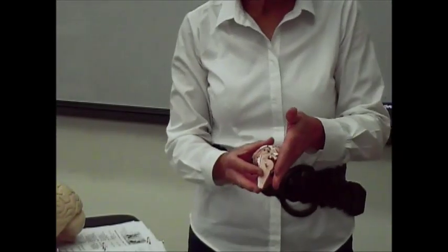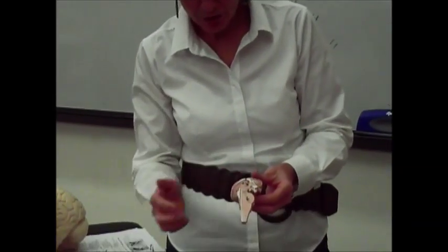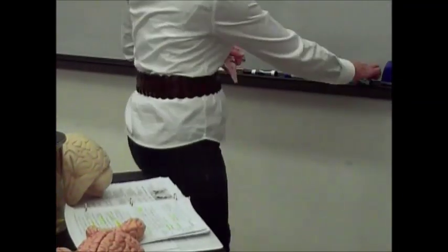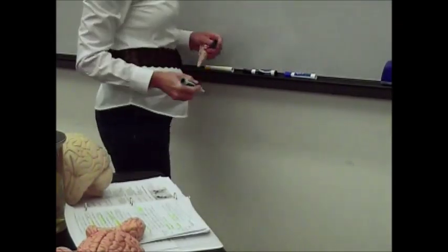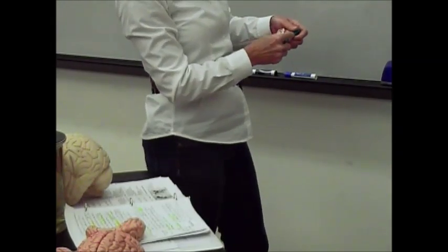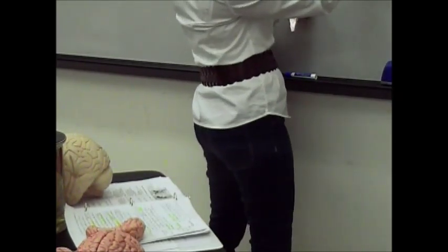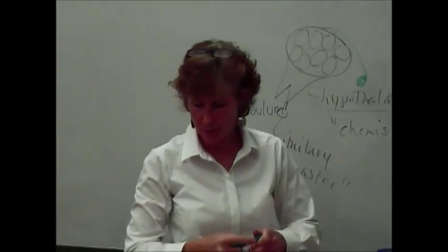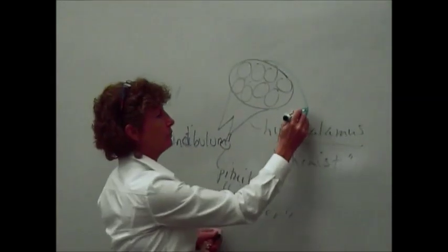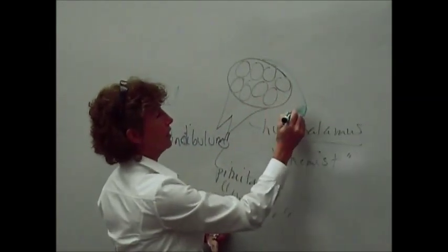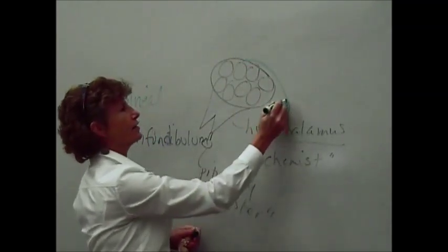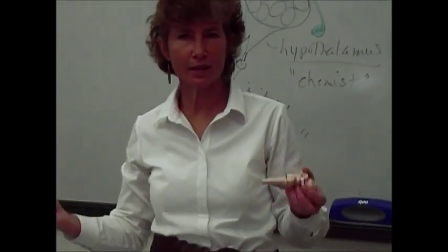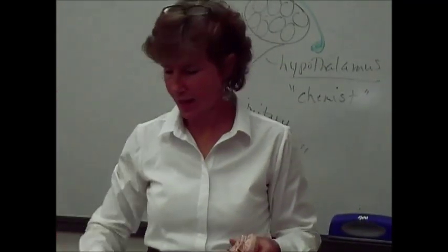This is all in the anterior portion of the diencephalon. If you look in the posterior portion, you'll see a little pink gland with kind of a tail. That's known as your pineal gland. The pineal gland comes up on the back side of the thalamus, and it has a tail that slips up into the third ventricle. The pineal gland secretes melatonin, which regulates your sleep-wake cycles.